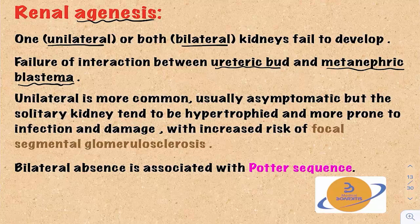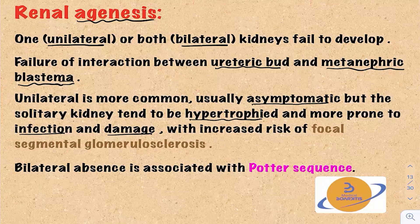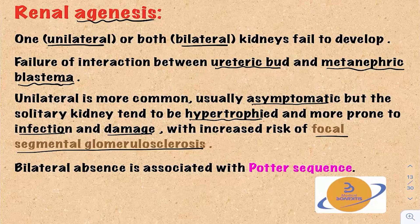Unilateral cases are more common and usually asymptomatic. But unfortunately, in the healthy kidney, it tends to be hypertrophied and is more prone to infection and damage. There is an increased risk of a disease called focal segmental glomerulosclerosis.